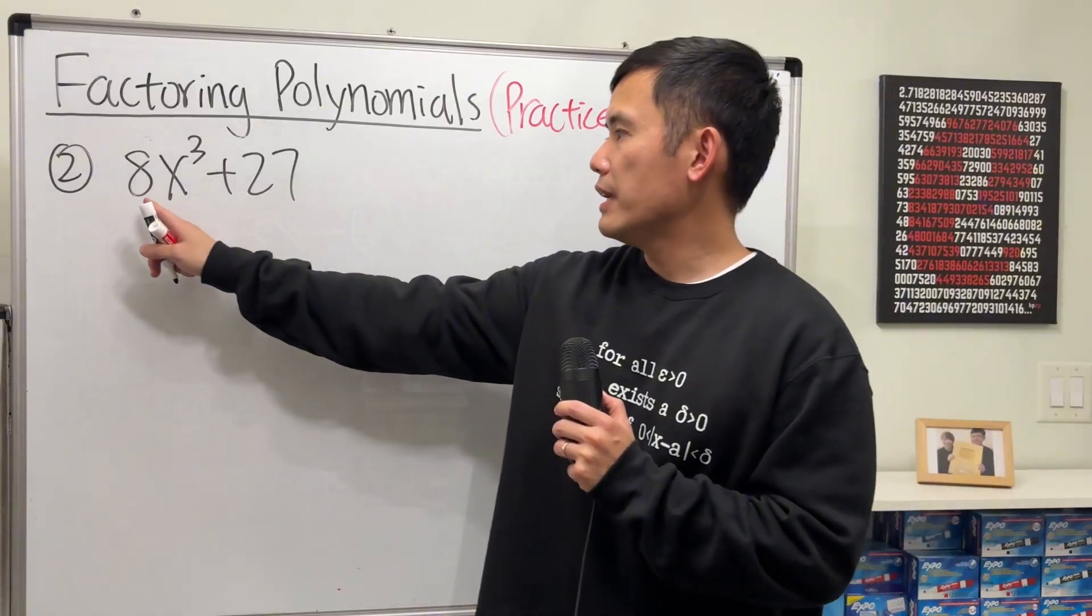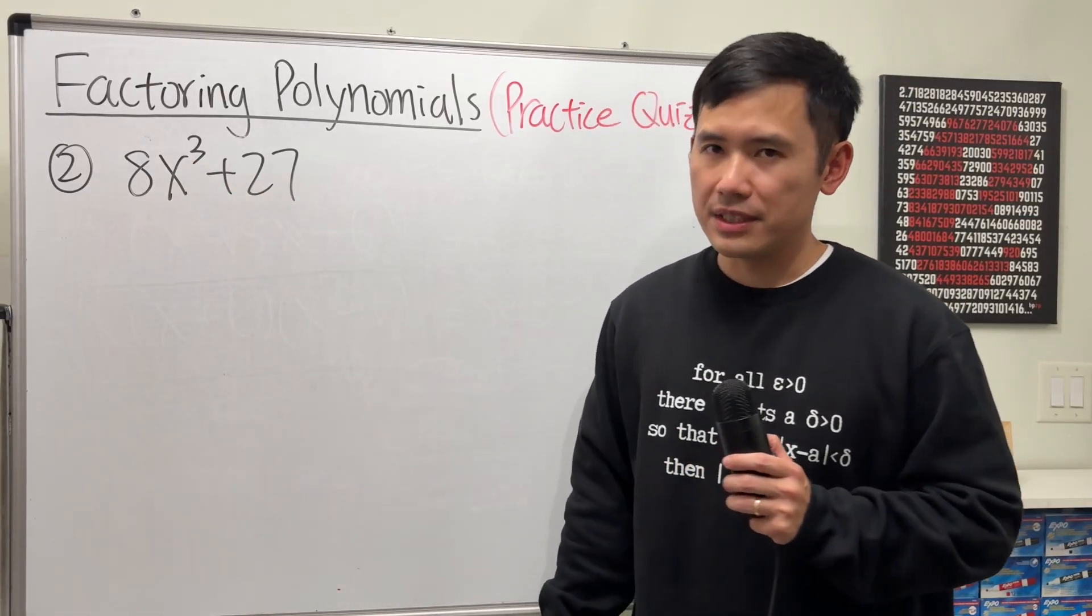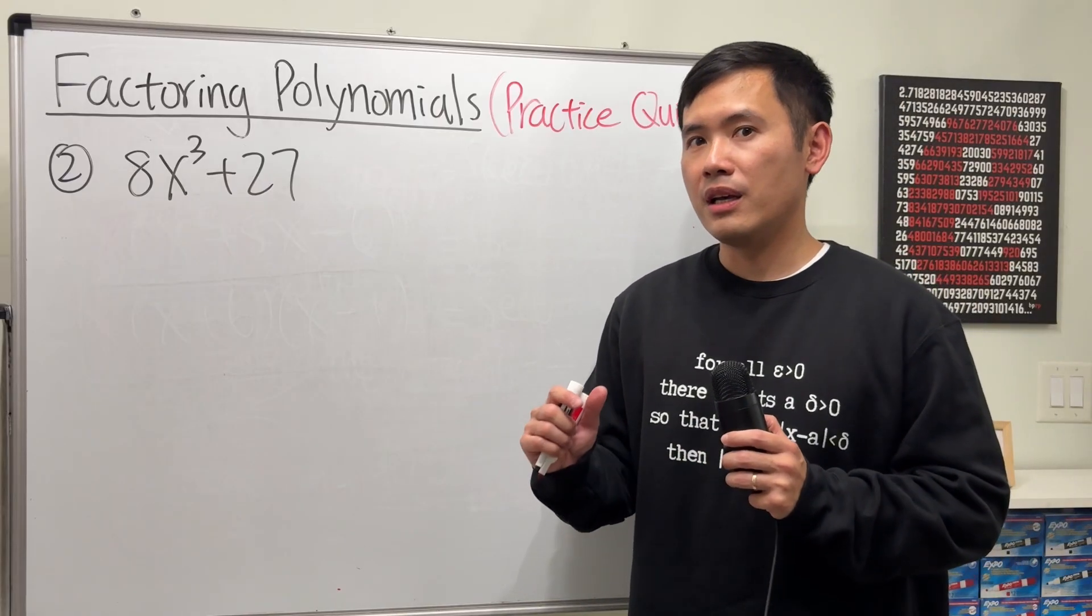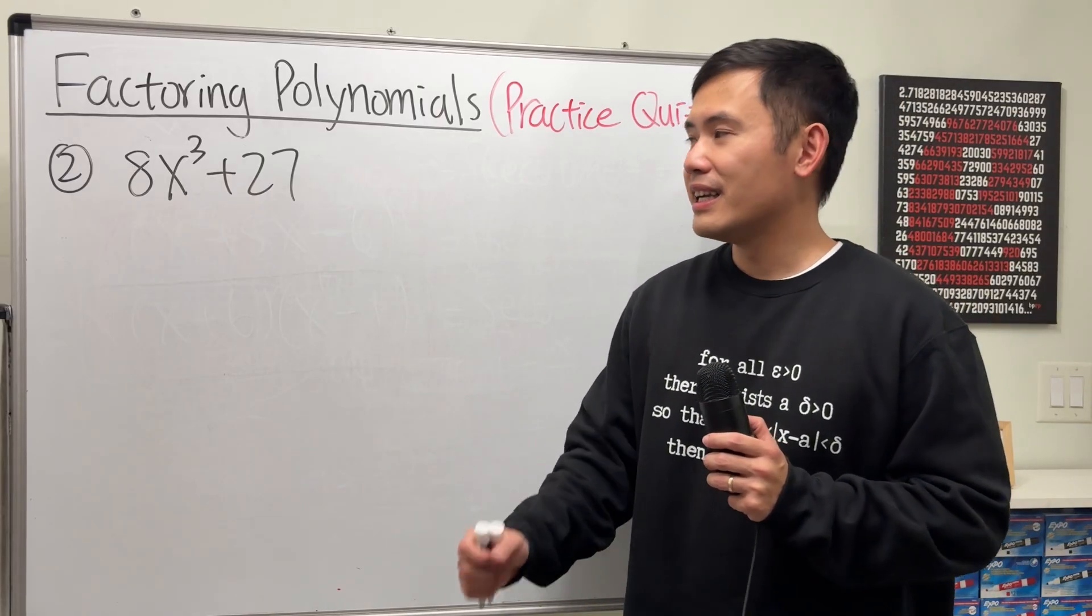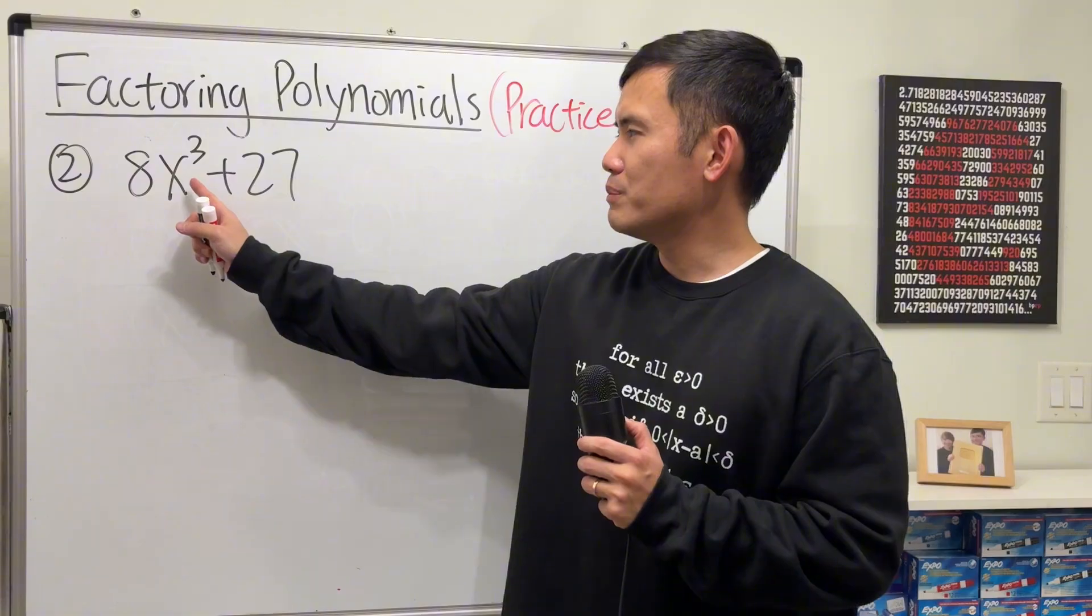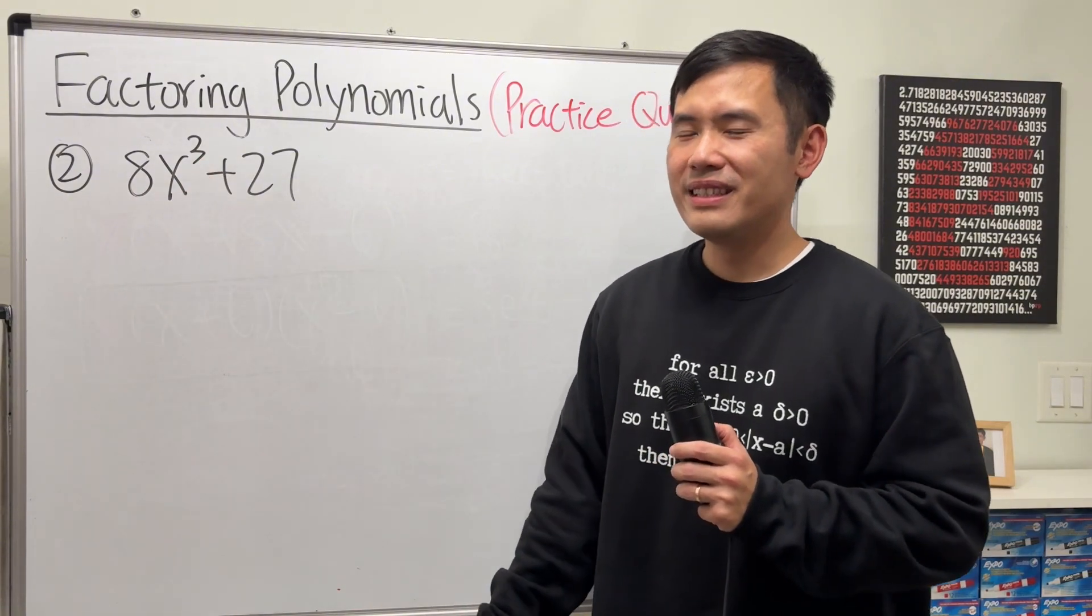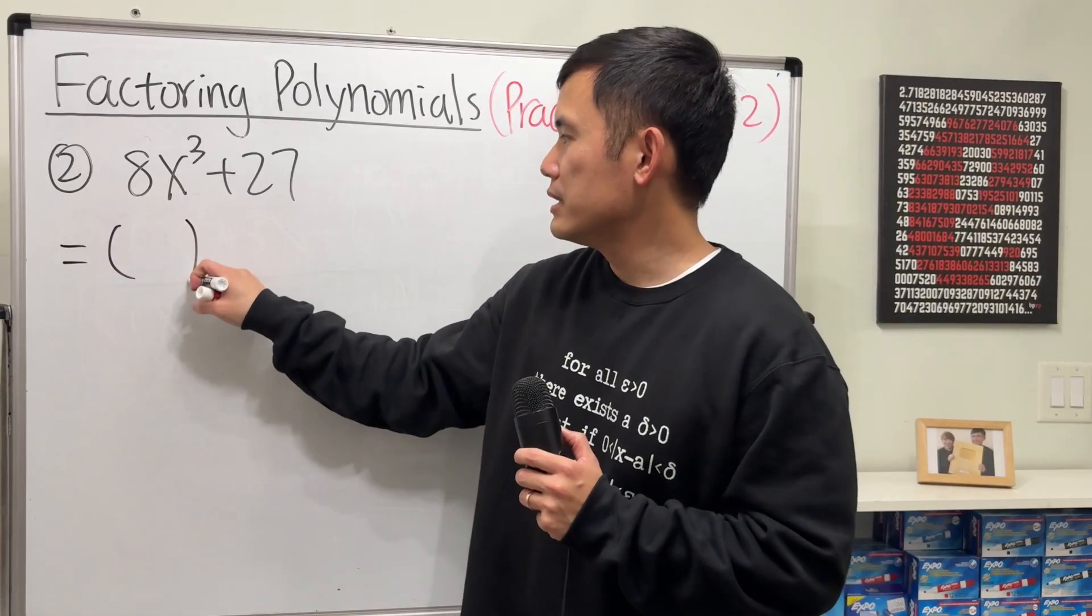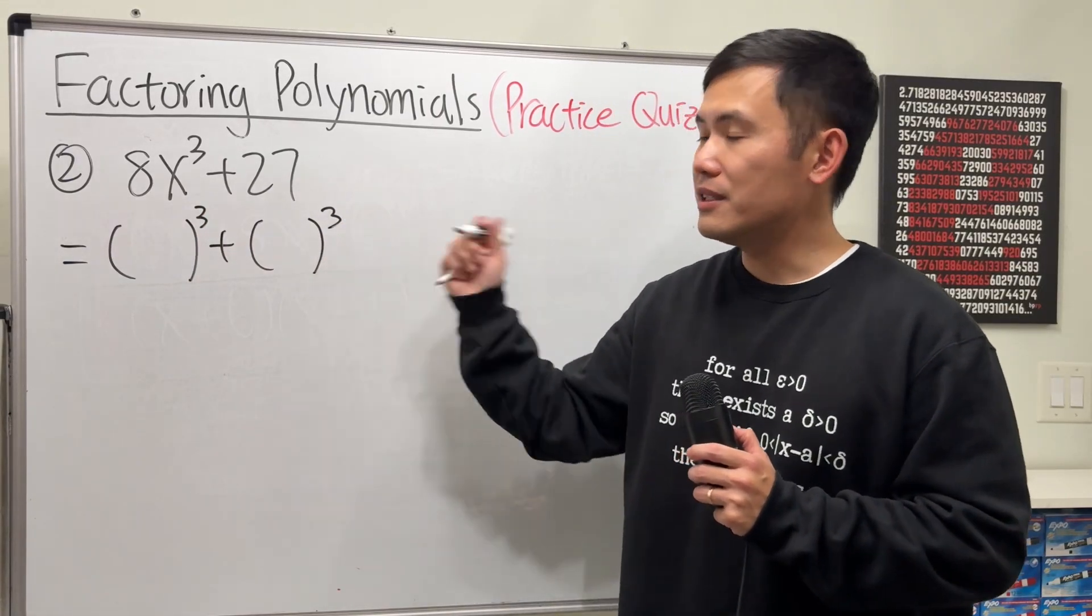For the second one, we have 8x³ + 27. Notice that we have two terms, so most likely it's going to be a formula question. Here we have a sum of two cubes. So the first thing is that we have to put this into the sum of two cubes form.